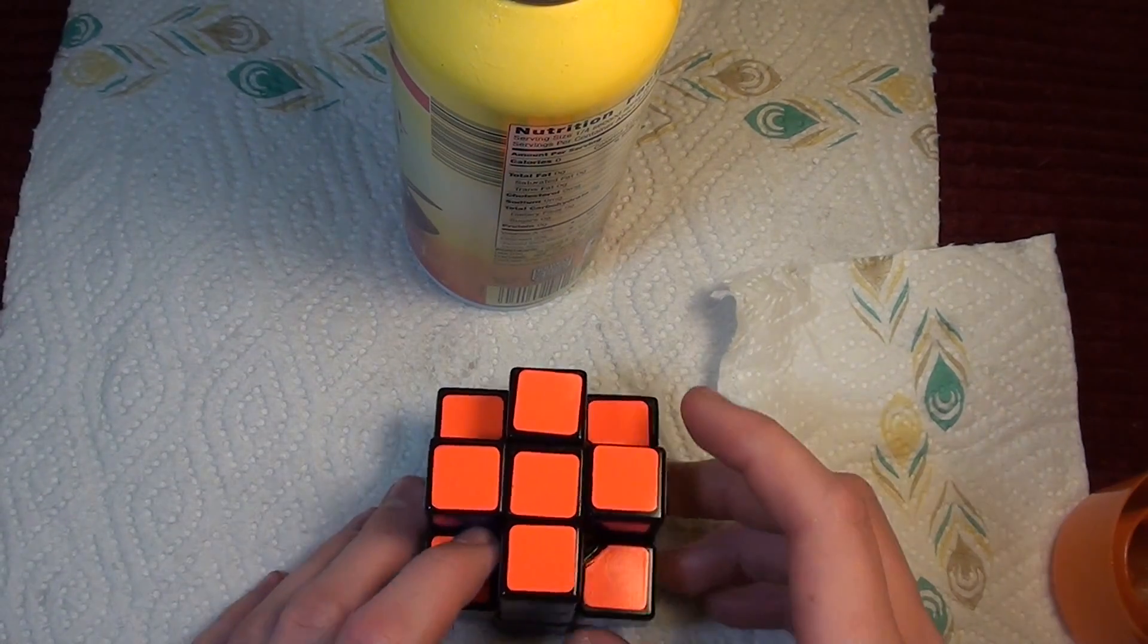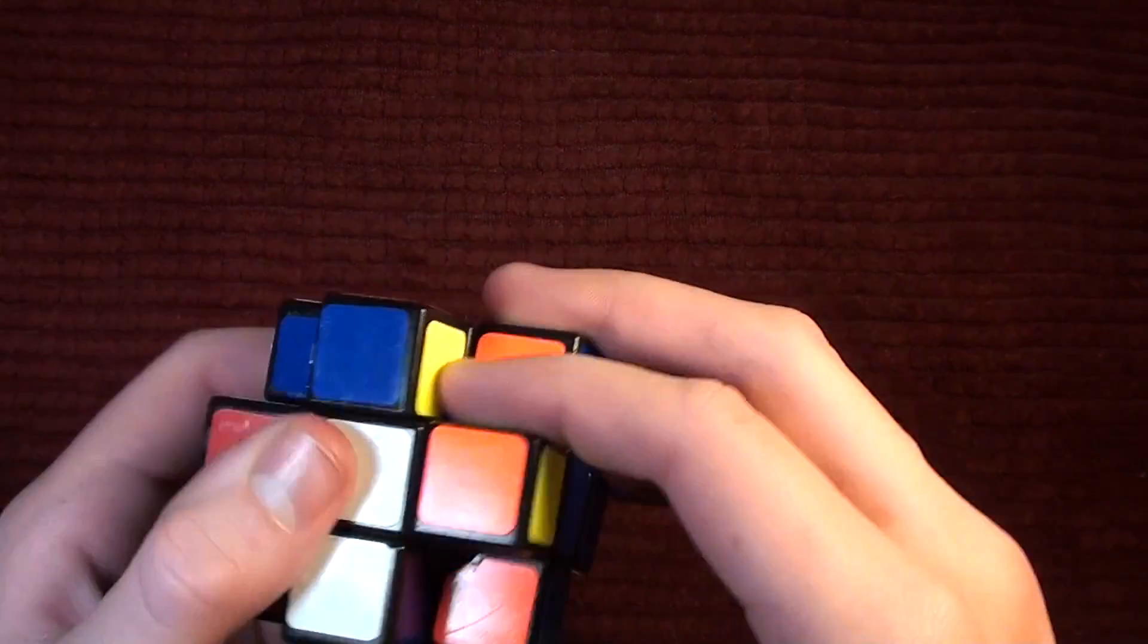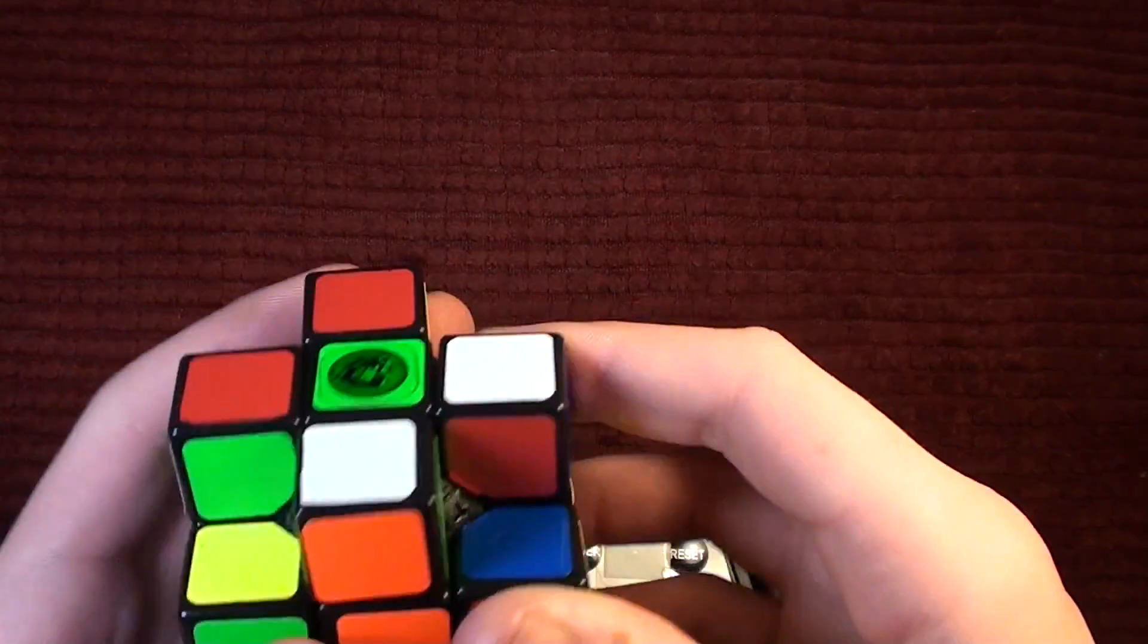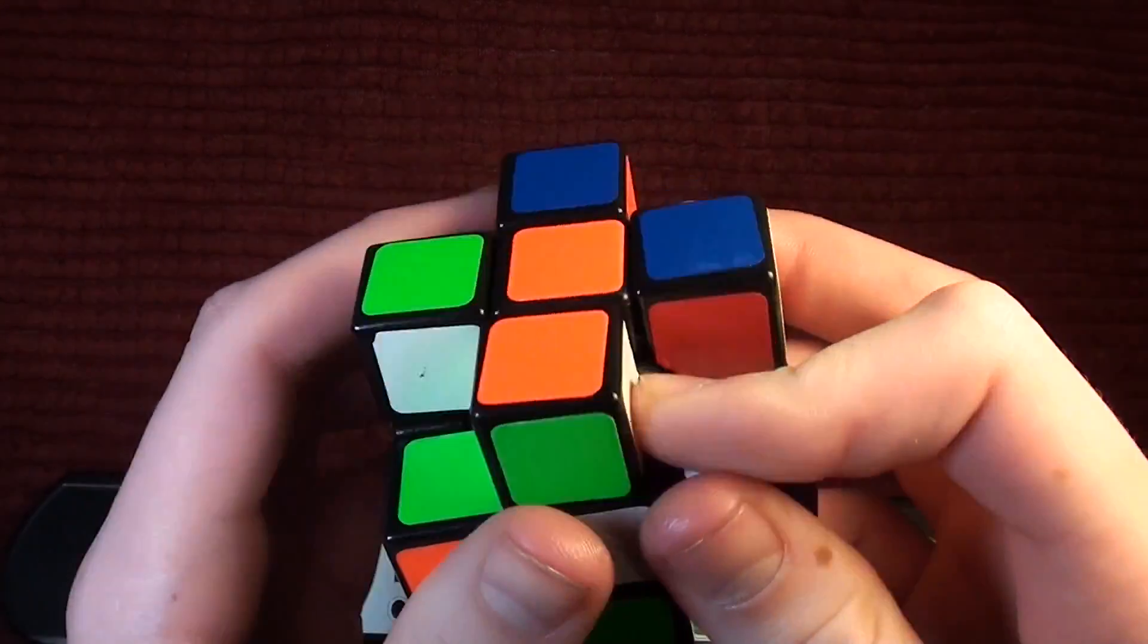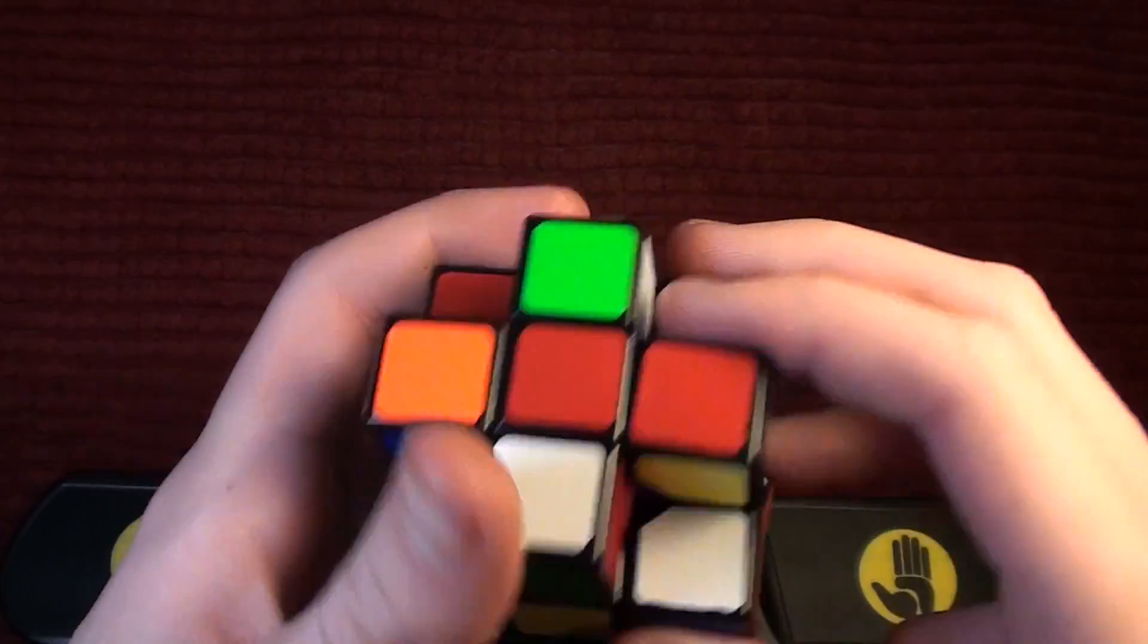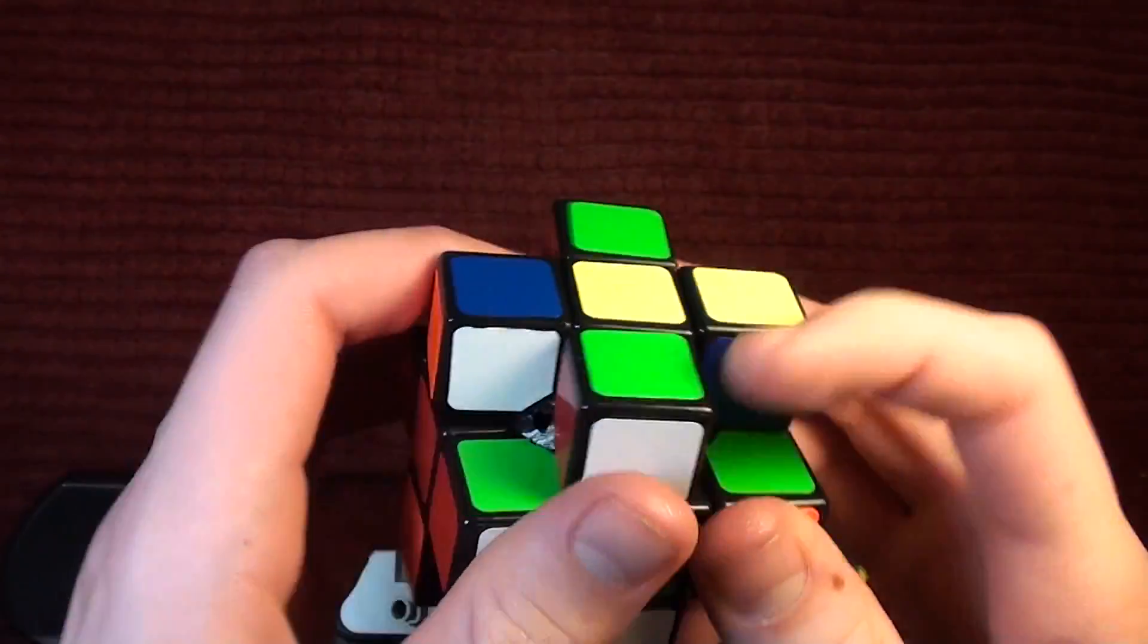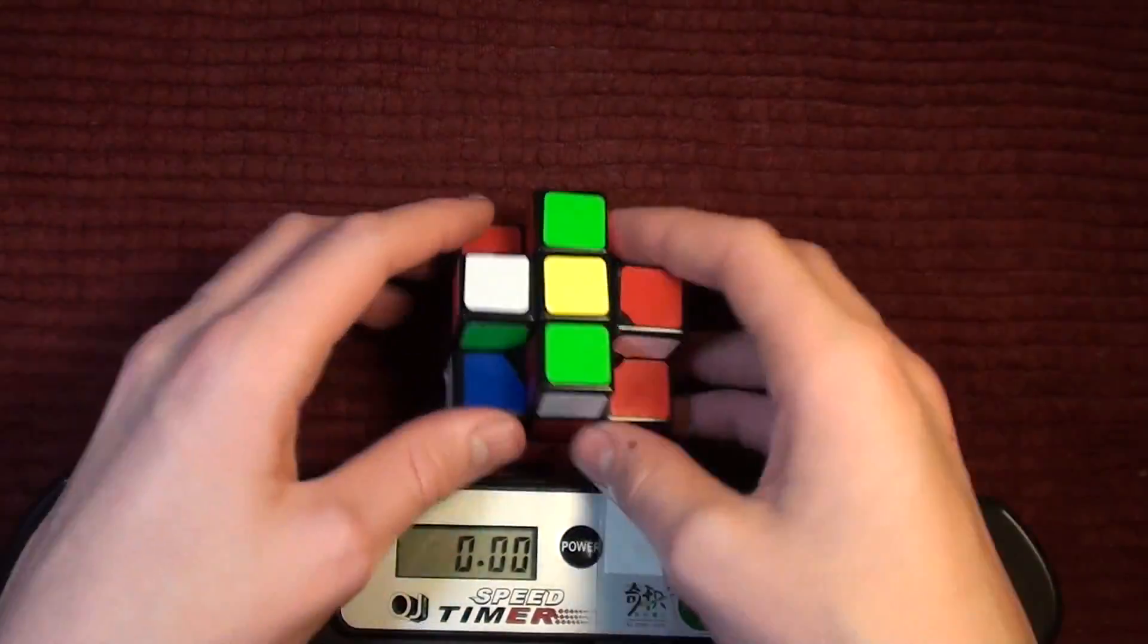So that is it for my edge cube mod. So I figured that you guys would want to see a solve of this puzzle. One thing I think is kind of weird is that it is very stable now compared to before. That pop was weird. It does not feel like it will pop at all now. So just hand scramble. I think it's fine for this situation.